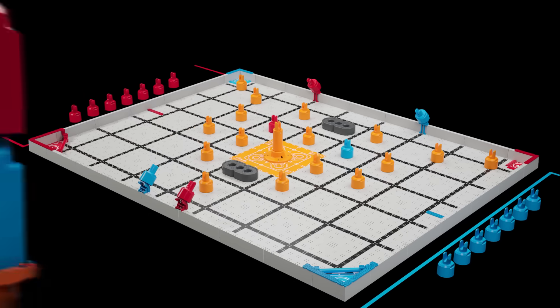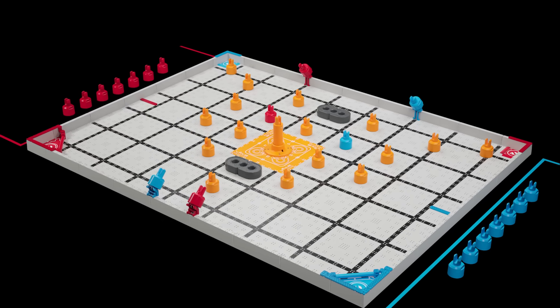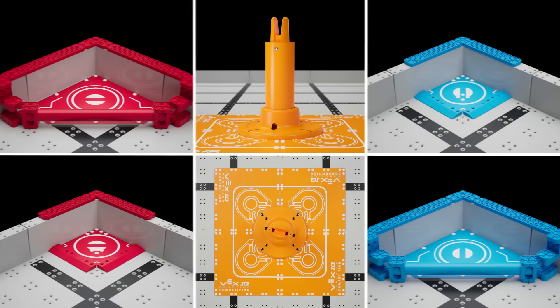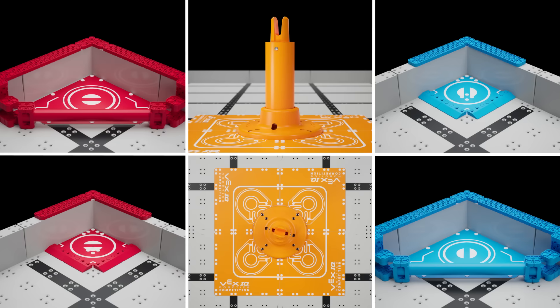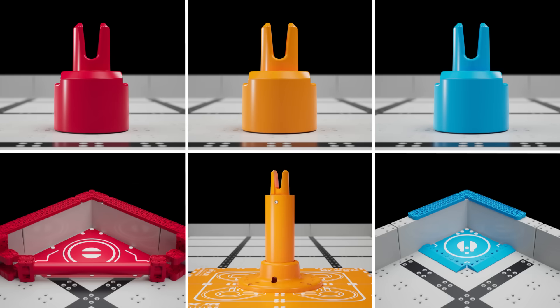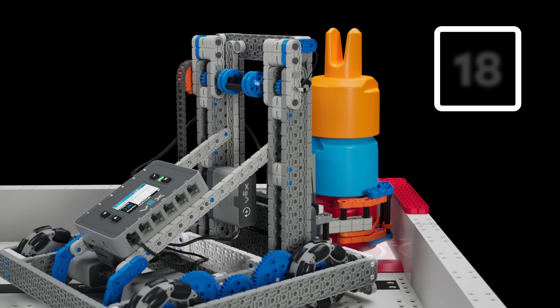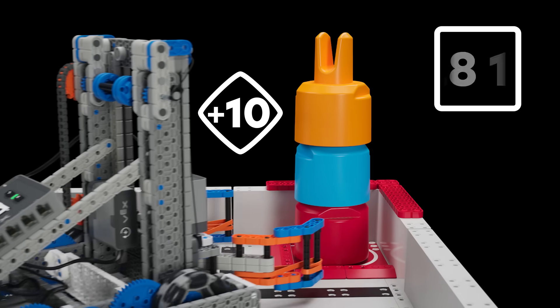Teams can move their stacks into any of the six goals around the field. There are two triangle goals, two square goals, a floor goal, and a standoff goal. Each goal has a color that matches one of the three pin colors. If the color of the bottom pin in the stack matches the color of the goal, that stack earns more points.